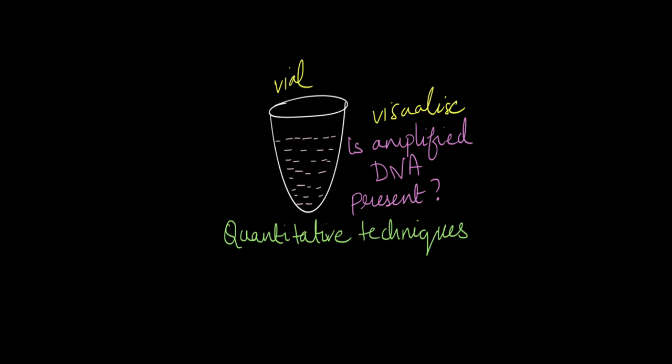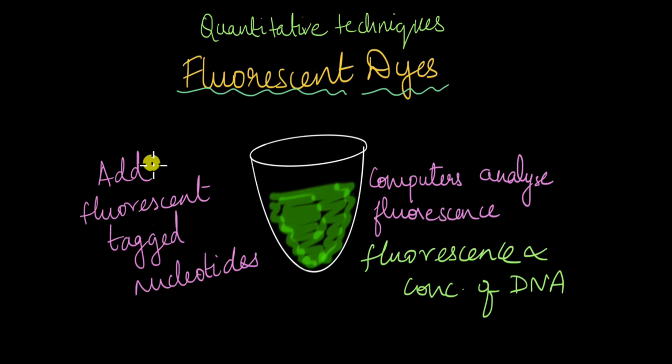One commonly used method is adding fluorescent dyes. We add fluorescent-tagged nucleotides to the PCR sample—whether A, G, C, or T, they're tagged with fluorescent molecules. If the specific bacterial DNA sequence is present and the primer binds to it, only then will these fluorescent molecules attach to the newly growing strand. We can analyze the sample's fluorescence using computers. If the DNA has amplified and the specific sequence is present, we'll get significant fluorescence. The amount of fluorescence tells us the DNA concentration.